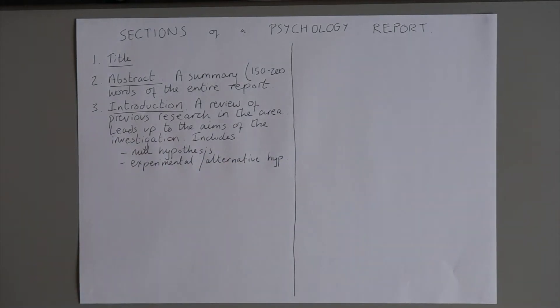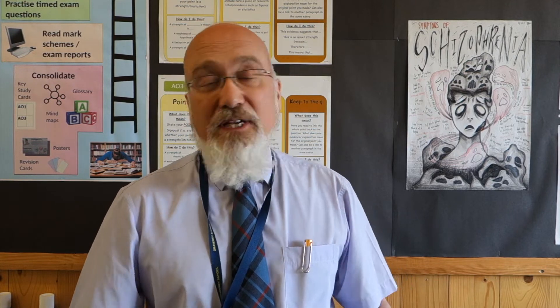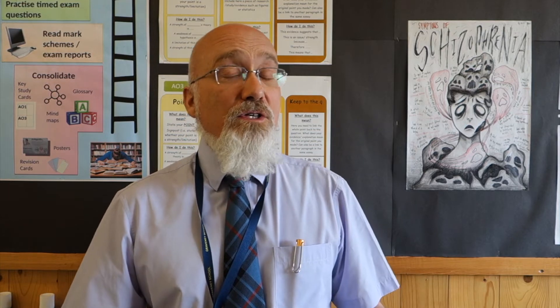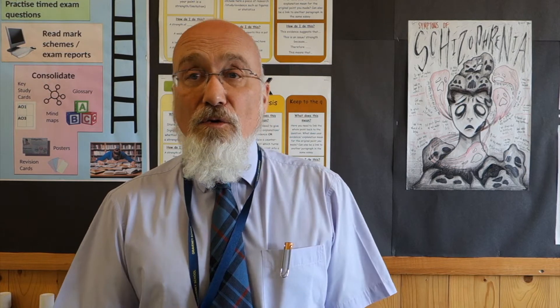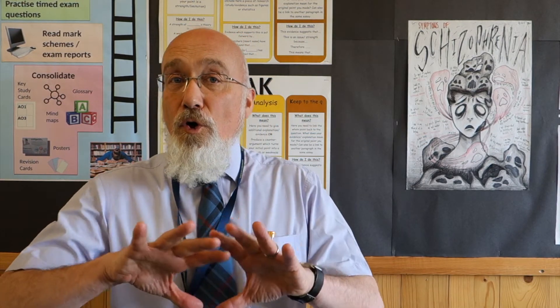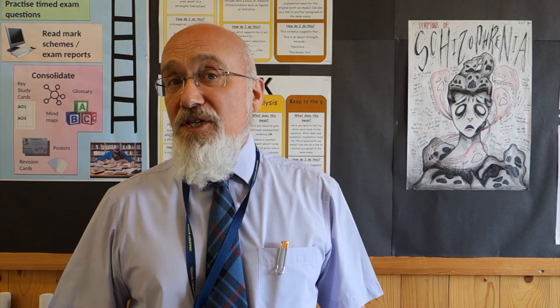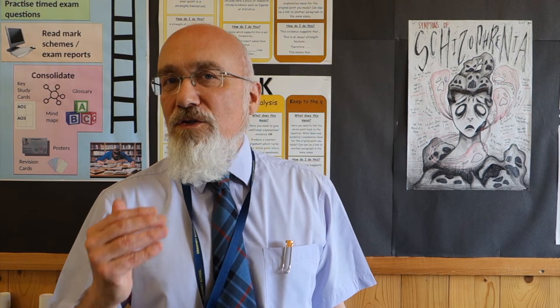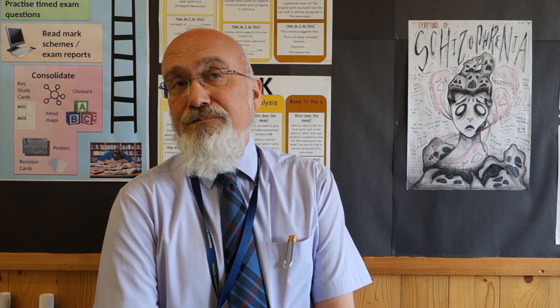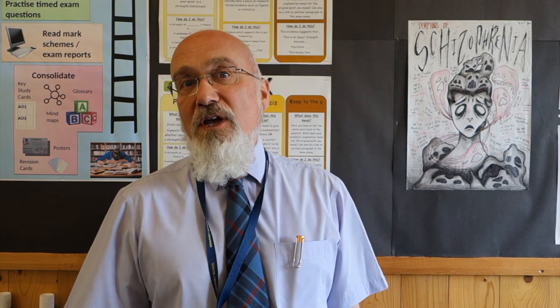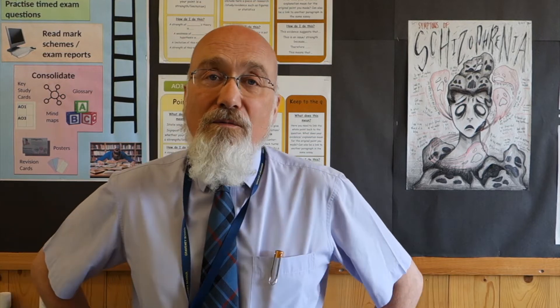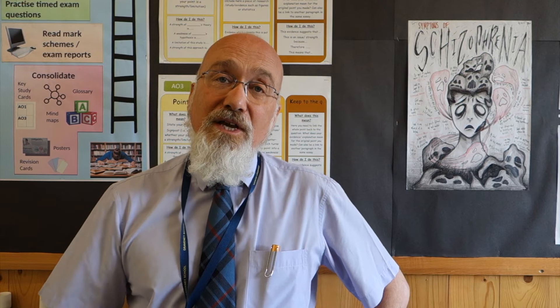The next section is the method, sometimes called the procedure. First, you mention the experimental design — is it independent groups, repeated measures, a correlation, a case study, or something else? Then you discuss the population you're aiming to investigate, the sample drawn from that population, and the sampling method used. You also need to mention any special apparatus being used — in the students' investigation, there's a questionnaire, which they've included as an appendix.